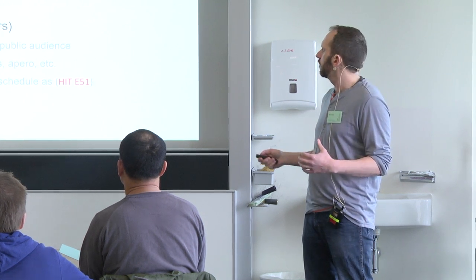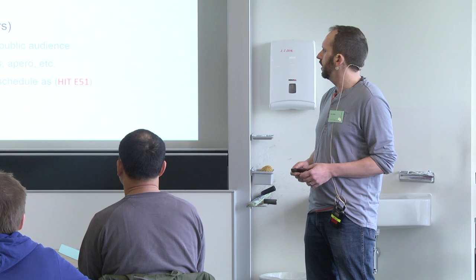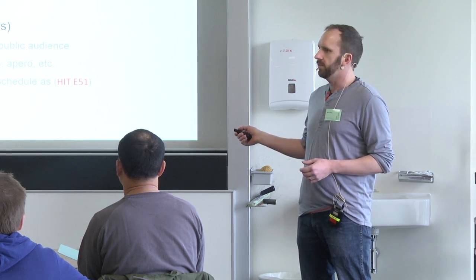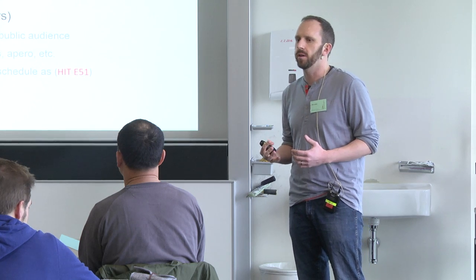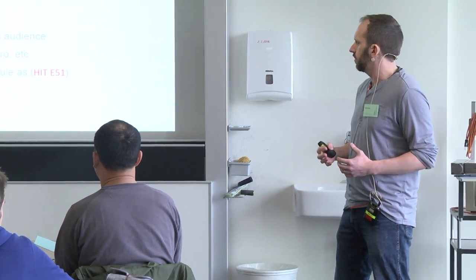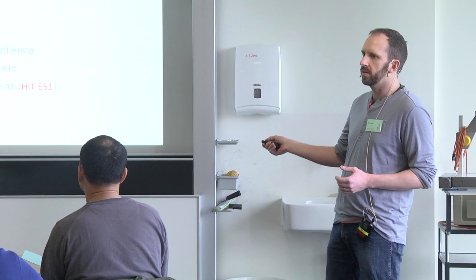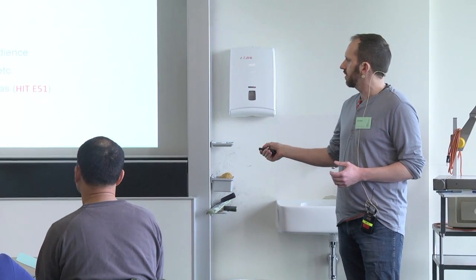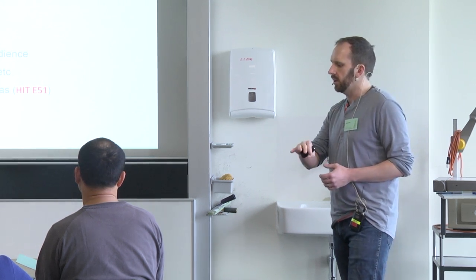For housekeeping: we're here in F32, where most lectures, tutorials, and Skyjams will take place. There's also a room downstairs, E51 — it's a larger lecture theater where we'll invite a public audience for some of the more interesting talks. That's also where we'll have coffee breaks and the apero. This is indicated on the schedule with the red label 'HIT E51'.